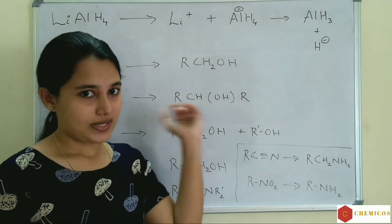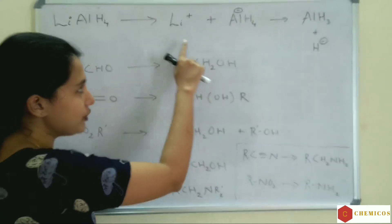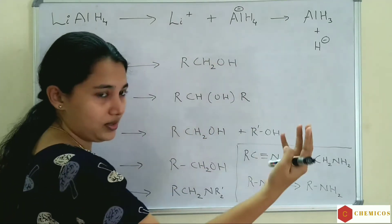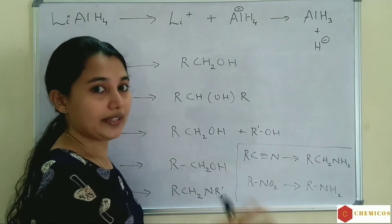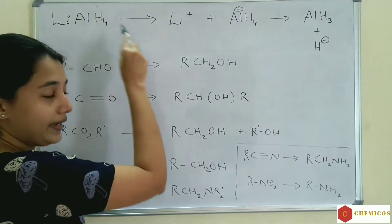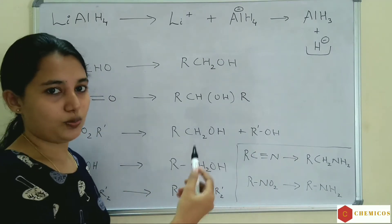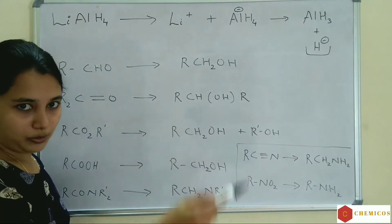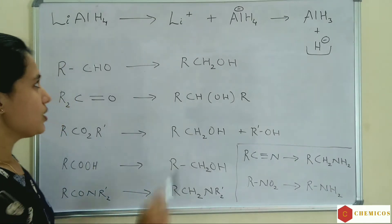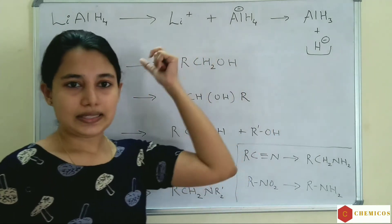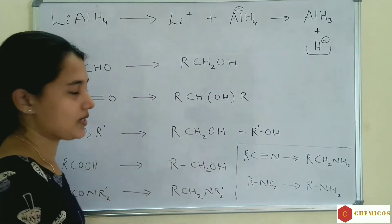Lithium aluminum hydride — what type of compounds are reduced by it? Lithium aluminum hydride first forms Li⁺ and AlH₄⁻, then AlH₃ plus H⁻. The H⁻ in LiAlH₄ plays the main role in reducing the compounds. In one LiAlH₄ molecule, four H⁻ are available, so it can reduce four times. H⁻ is the main species playing the key role in reduction.